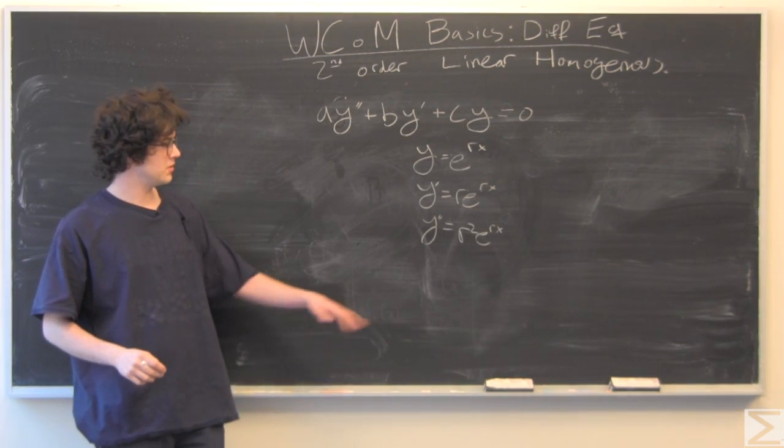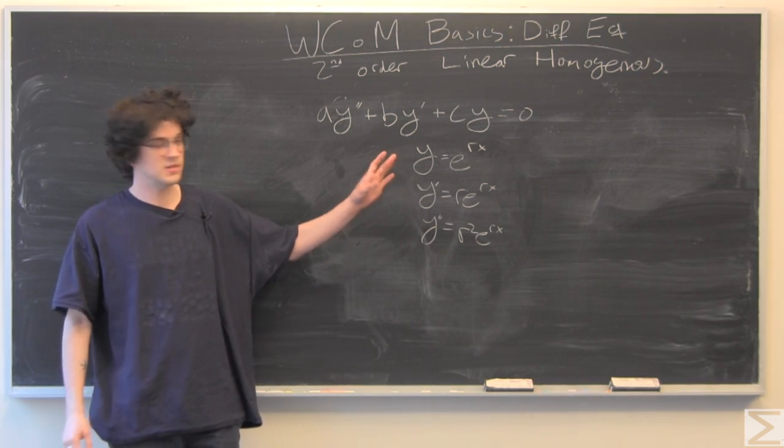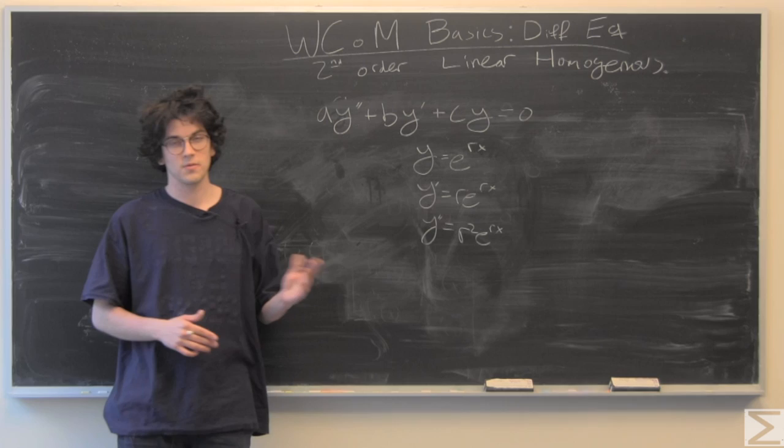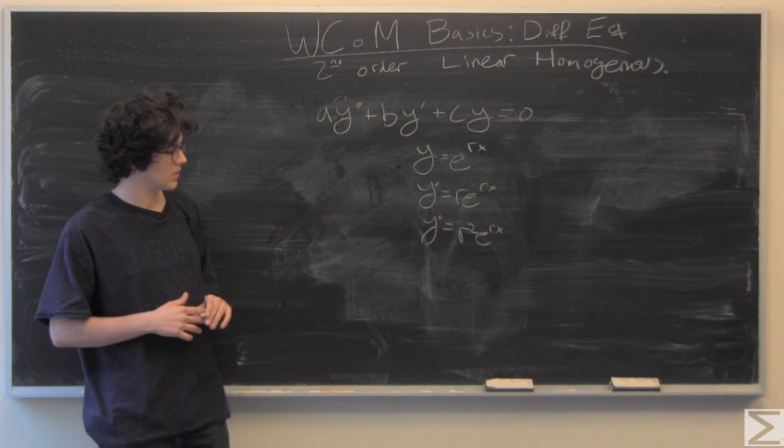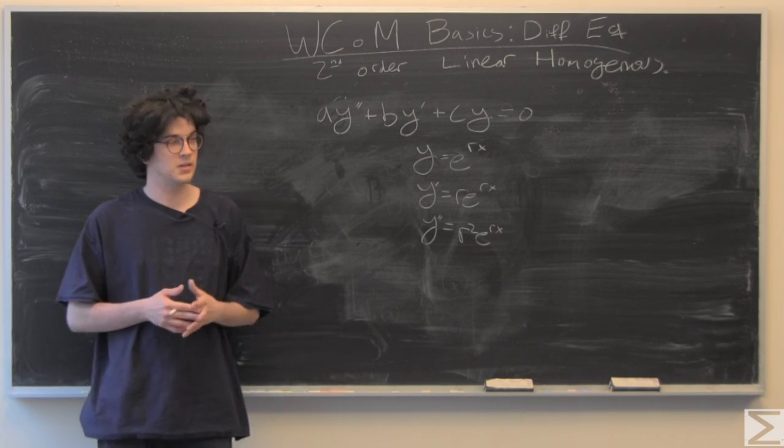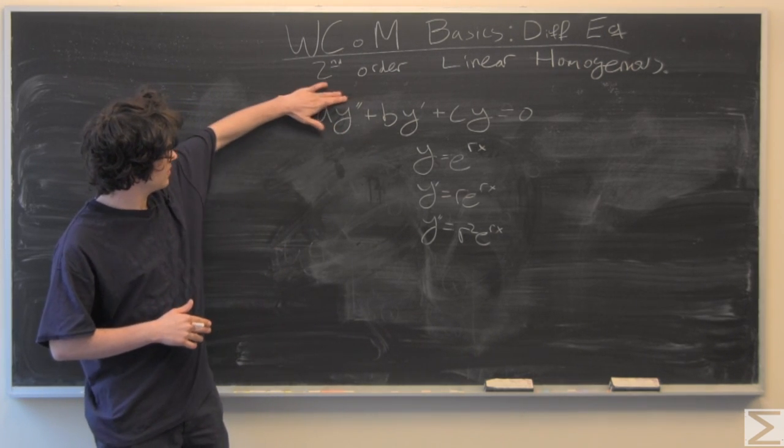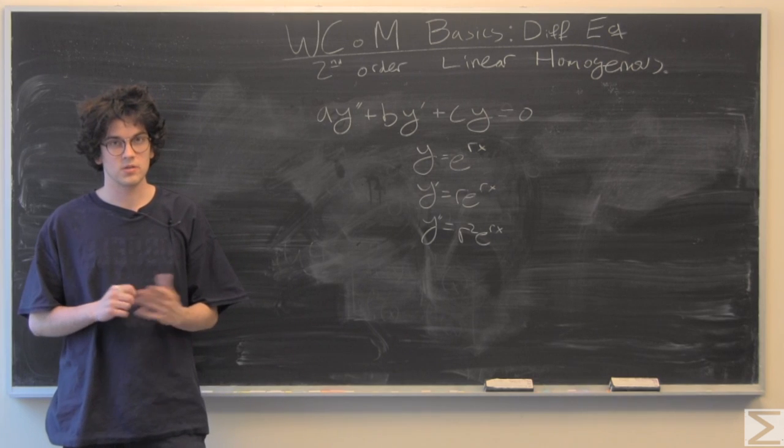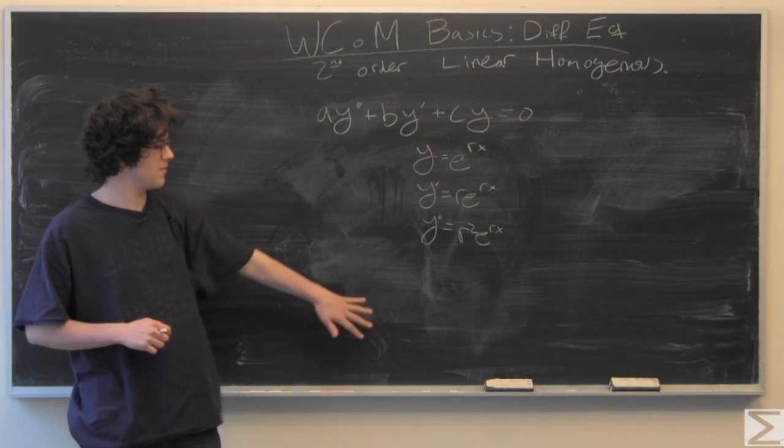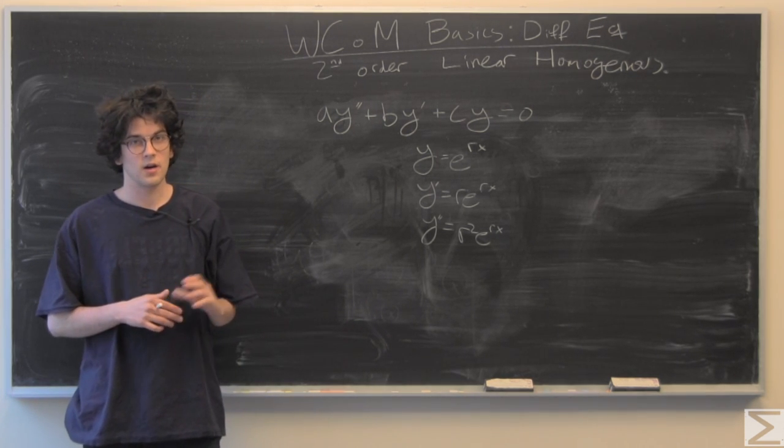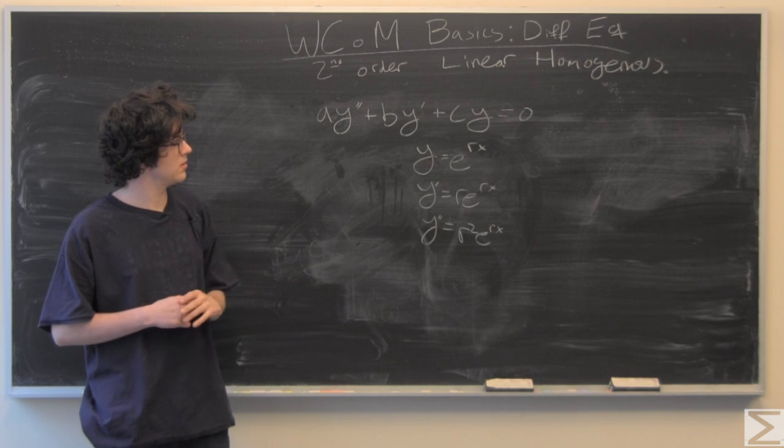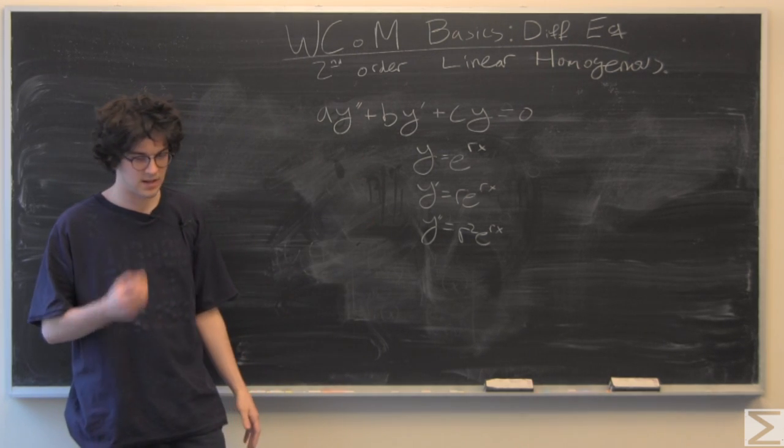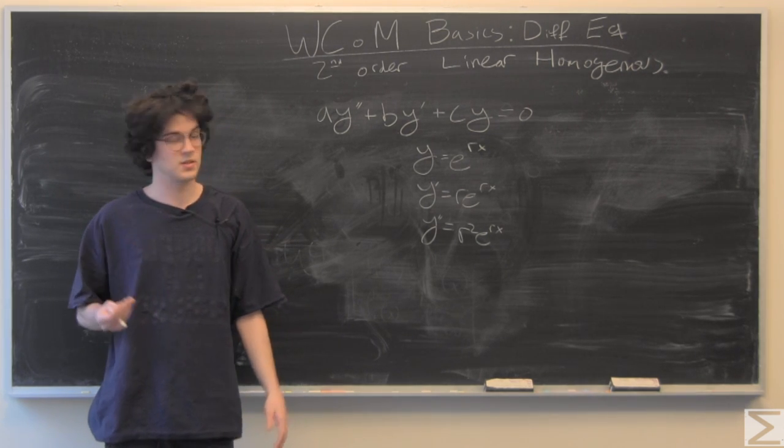In this video, I'm just going to wave my hands and say that our solution Y that's going to solve this is going to be of the form e to the Rx. There's really a deep meaning to why this is true. It has to do with differential operators. But for now, we're just going to use this as a tool to solve our differential equations. Plugging in what we have for our first and second derivatives and for our function of Y into our second order linear homogeneous differential equation, we can see that it factors out and we have something to solve for R.